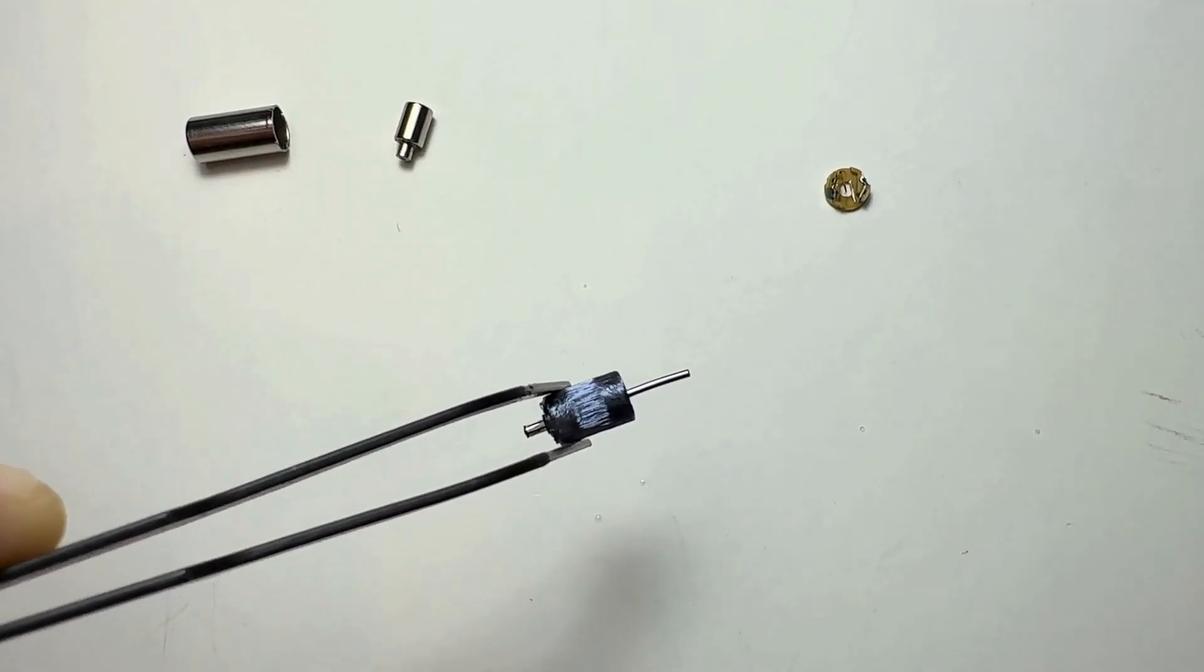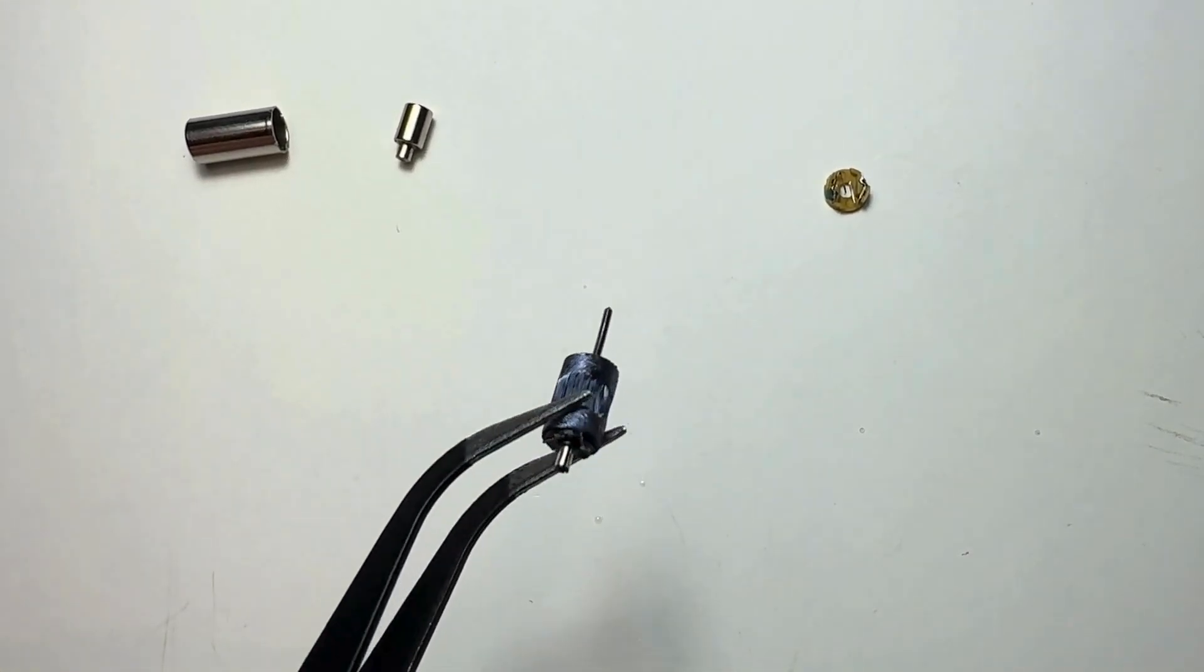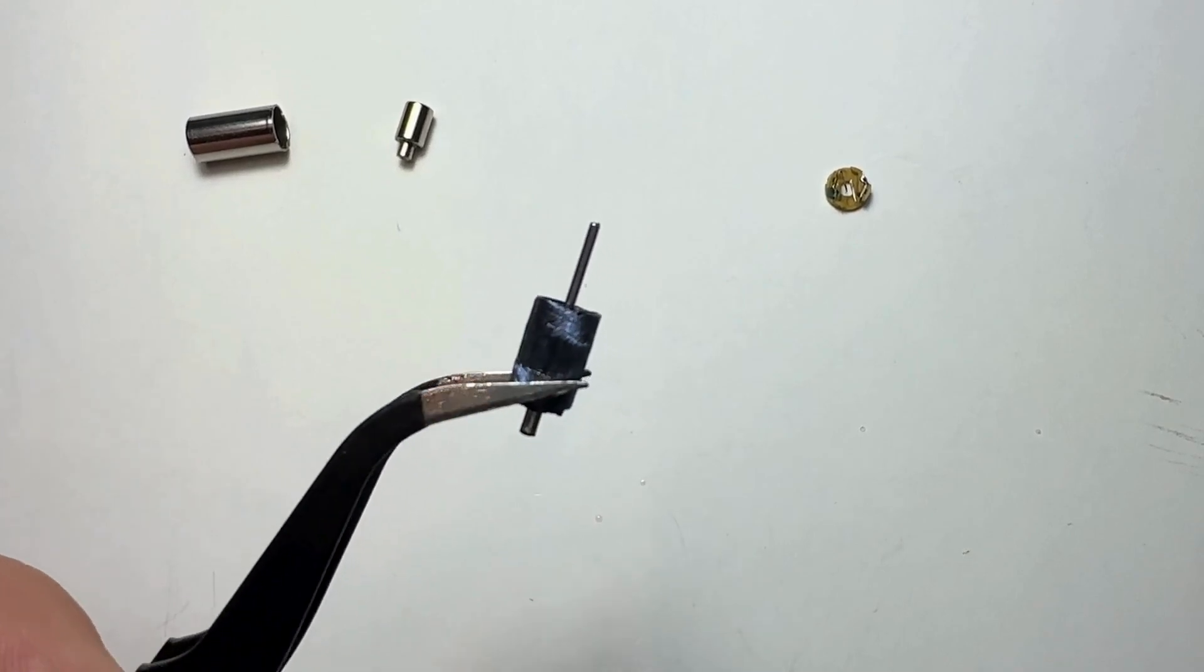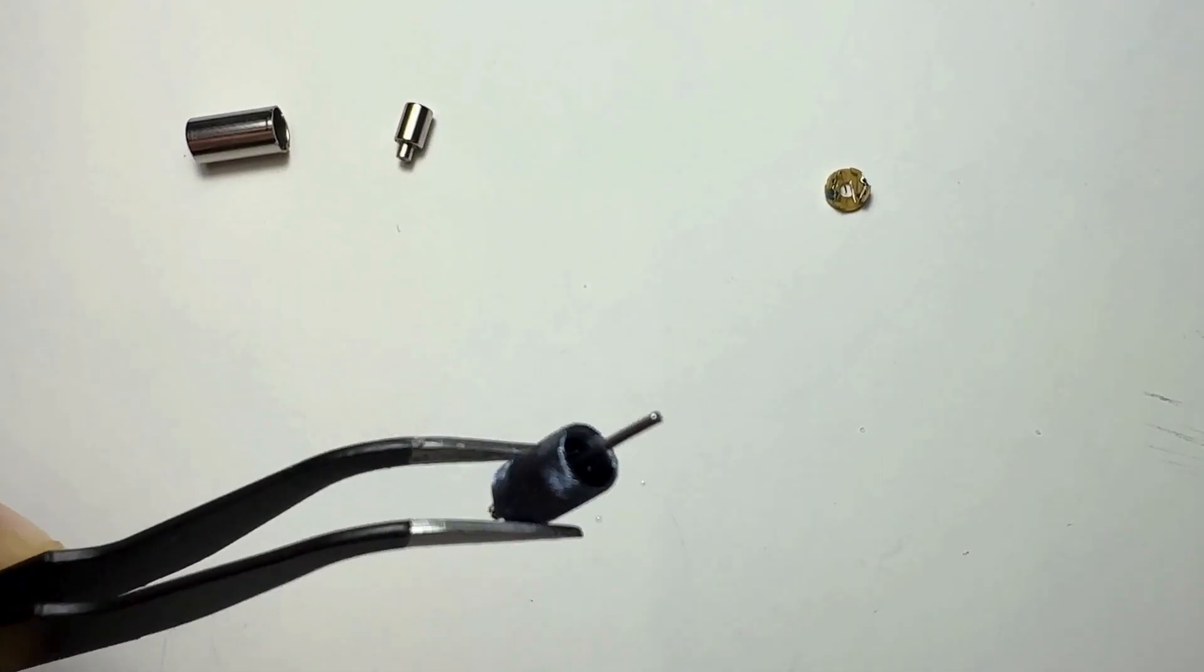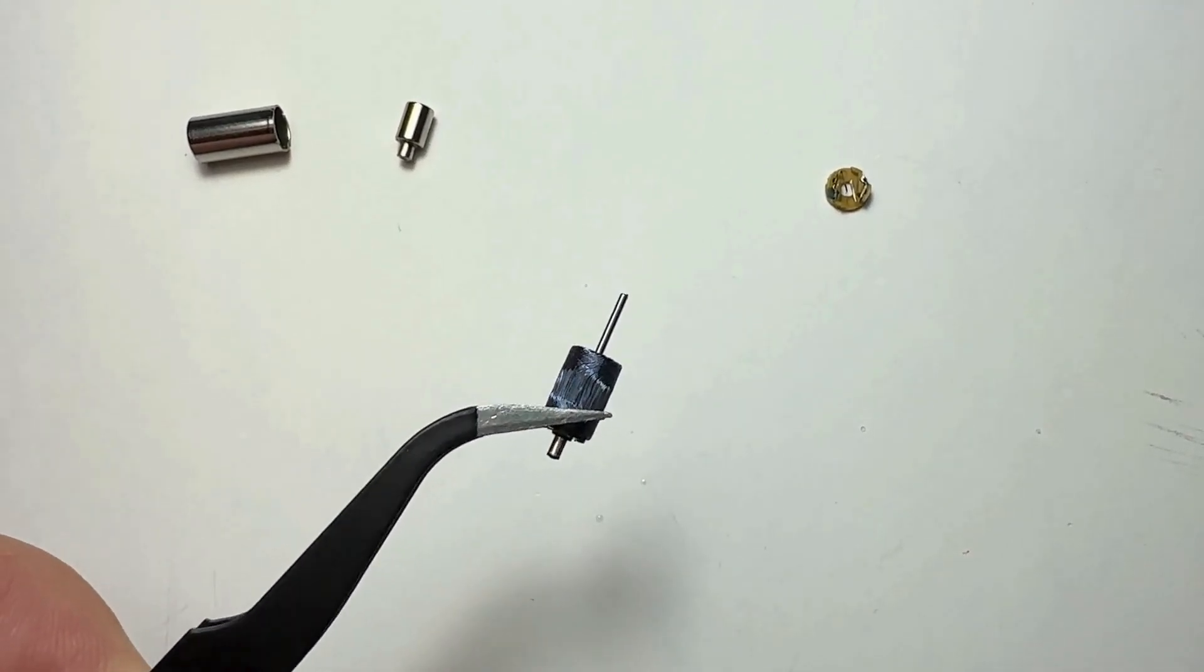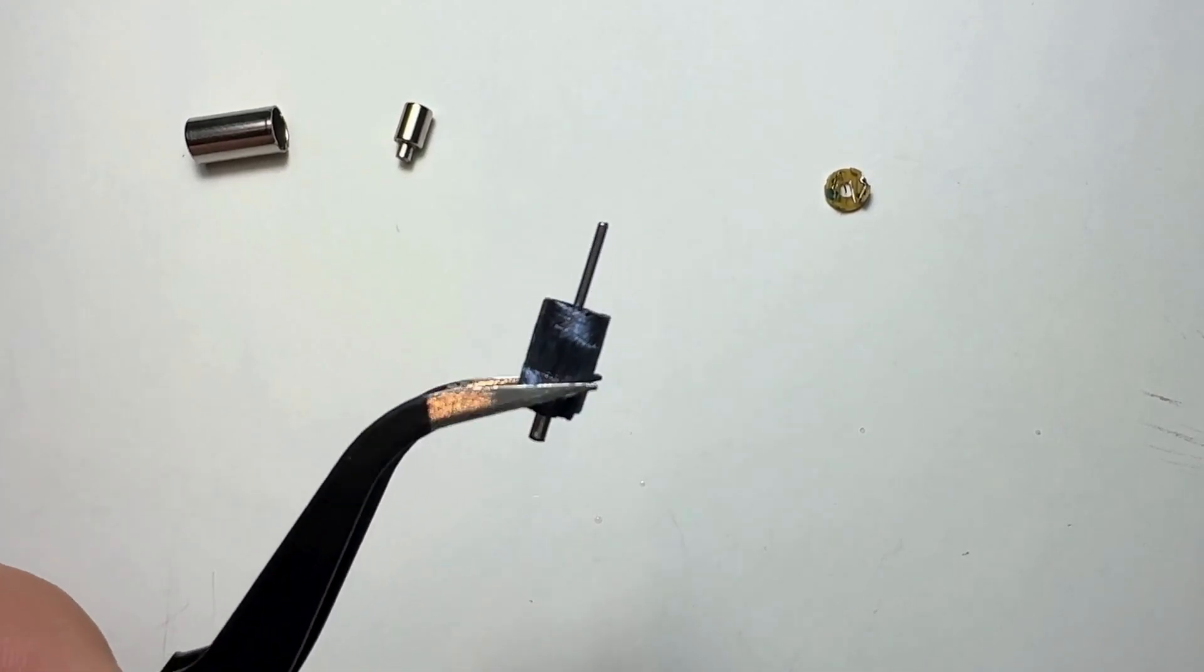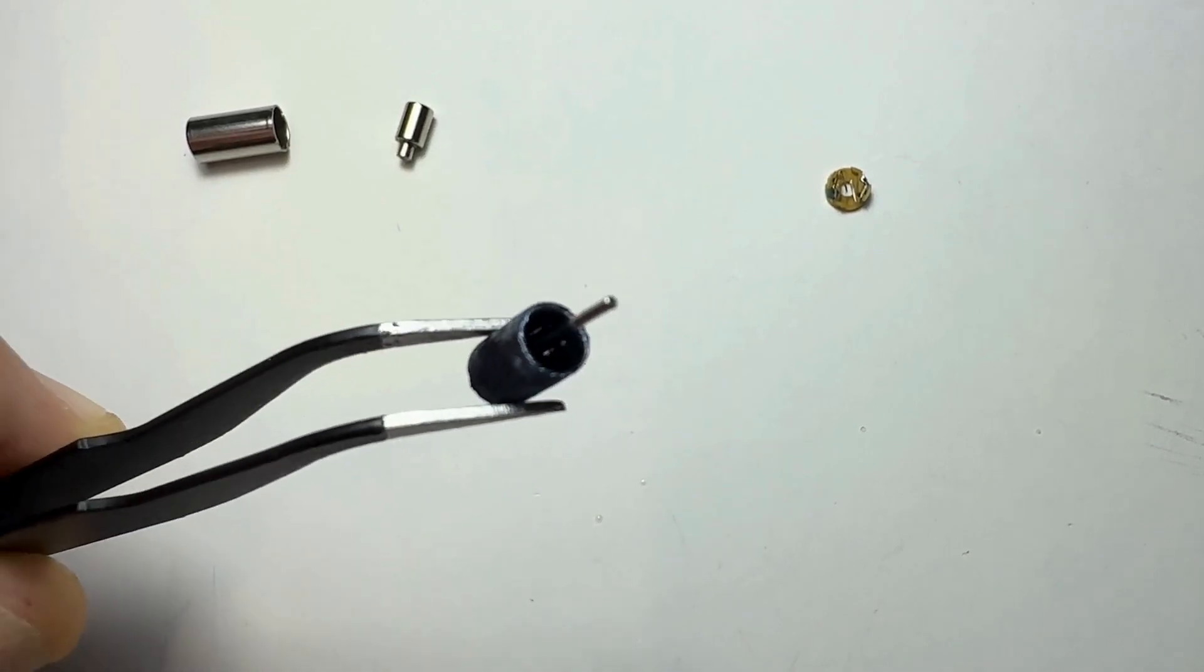This component is the rotor, a small and lightweight assembly that includes a coil winding. The coil is wound around the rotor without the presence of an iron core, adhering to the coreless design principle. Thin wire is wound around the rotor to form coil windings. When an electric current flows through these windings, a magnetic field is generated, resulting in the rotational or vibrational motion of the rotor.